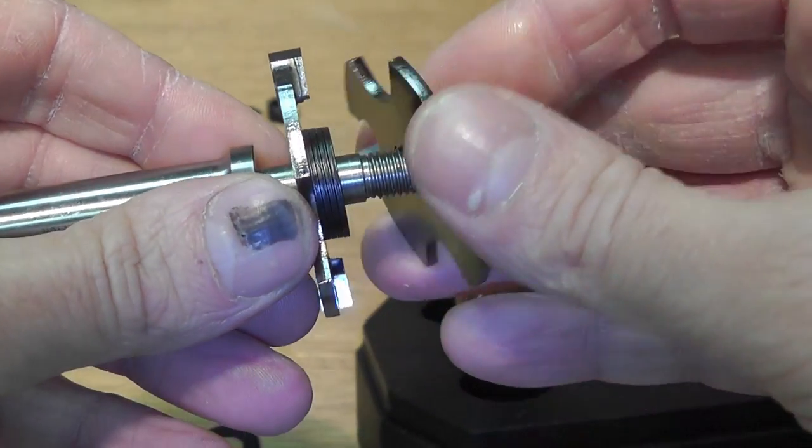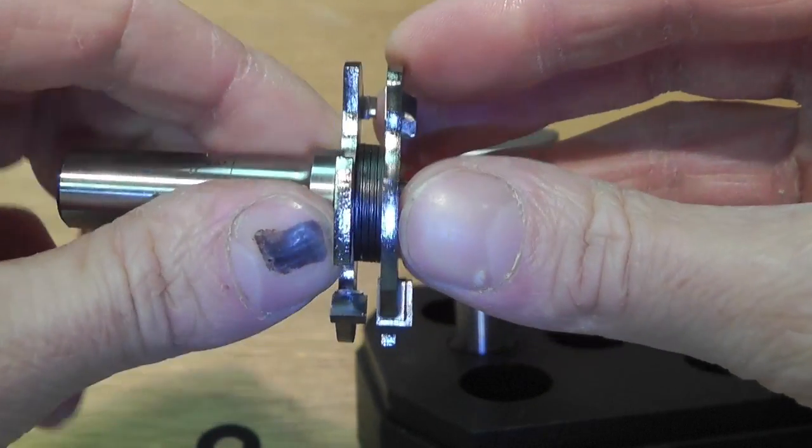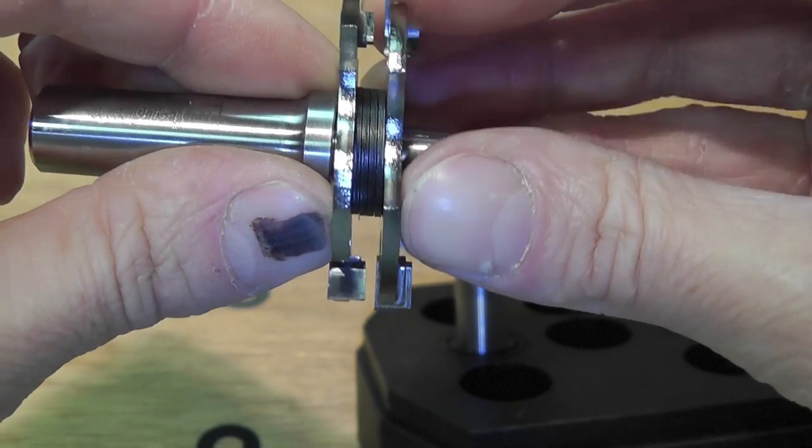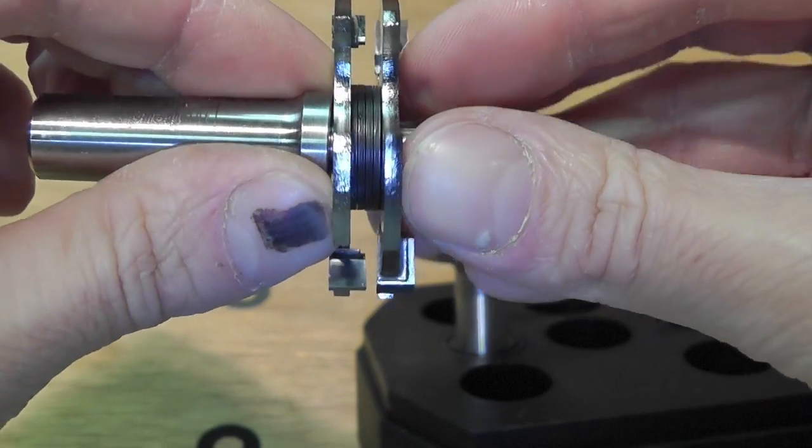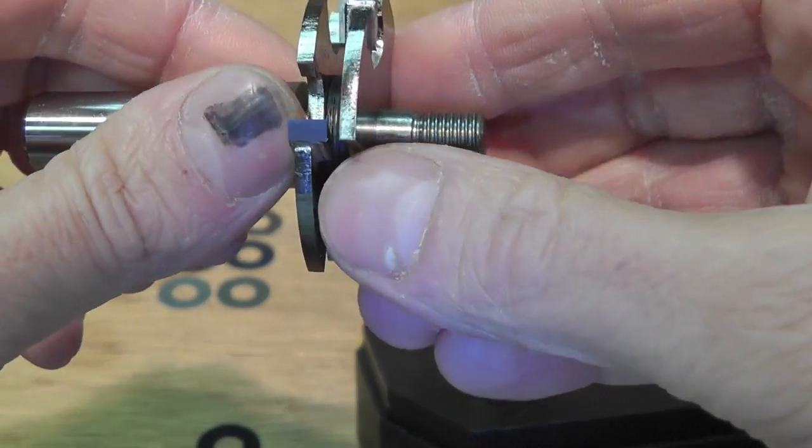So when you assemble it, make sure you don't assemble them like this. Otherwise, you're going to run into problems. You'll have a big gap in the middle when you're routing. You don't want this to happen. Always make sure to assemble it like this.